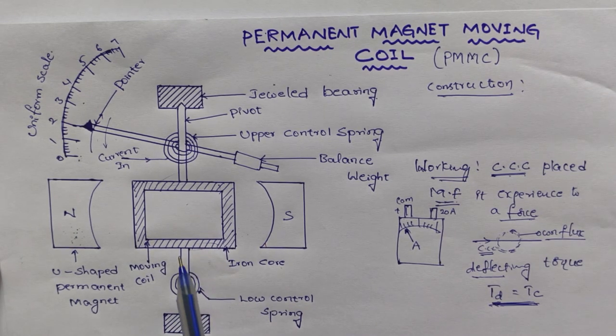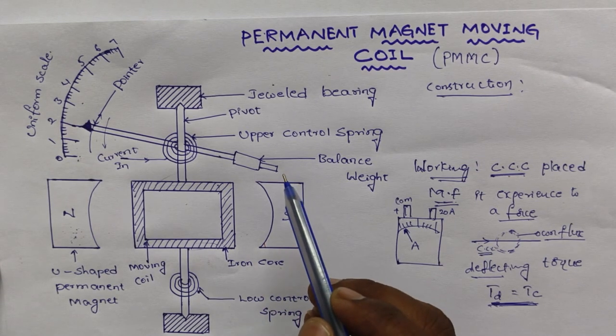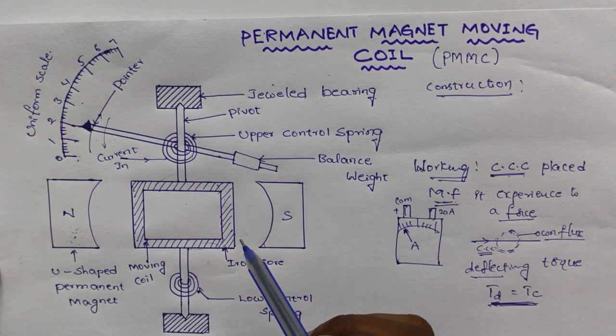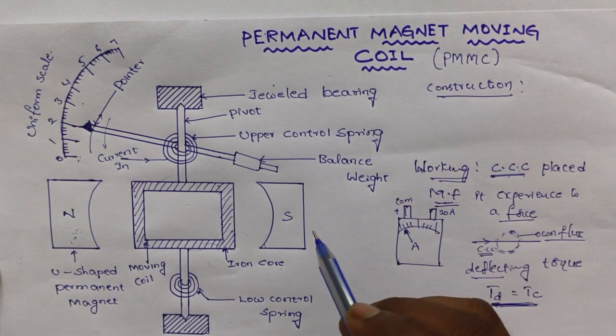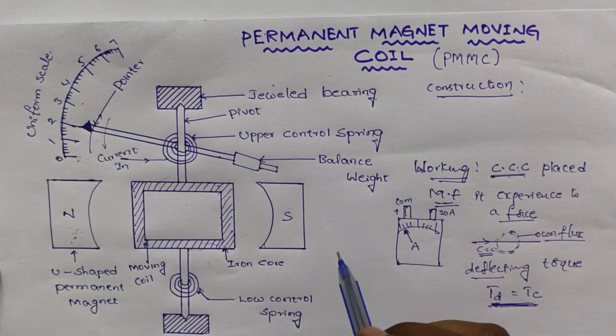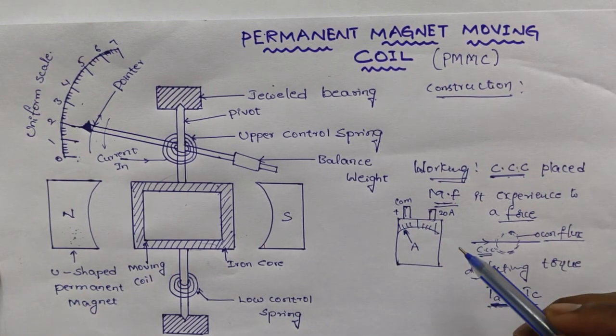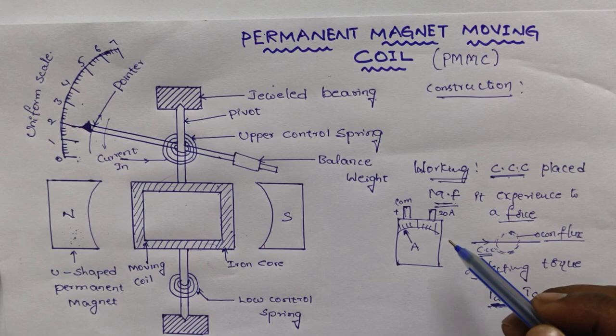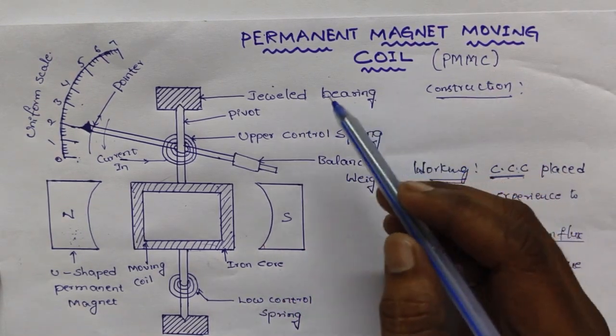So, regarding controlling torque, deflecting torque and damping torque, I explained in my previous lecture. If you want to know more and more, I am going to place that link in the description. Please go through and watch that to improve the knowledge on three types of torque. So, like this permanent magnet moving coil works.